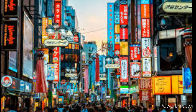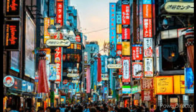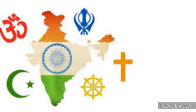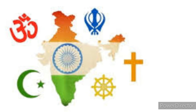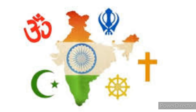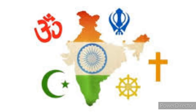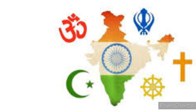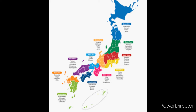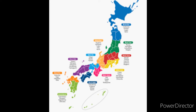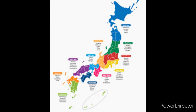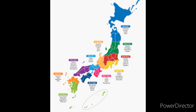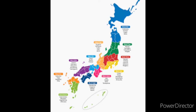Japan population is 126.32 million, and population density is 334 people per square kilometre. India religions: Hinduism 79.8%, Islam 14.2%, Christianity 2.3%, Sikhism 1.7%, Buddhism 0.7%, Jainism 0.4%, and various religions 0.88%. Japan religions: Shinto 69.0%, Buddhism 66.7%, Christianity 1.5%, and various religions 6.2%. Around 4.4% of Japanese people practice both Shinto and Buddhism simultaneously, which adds up to more than 100%.